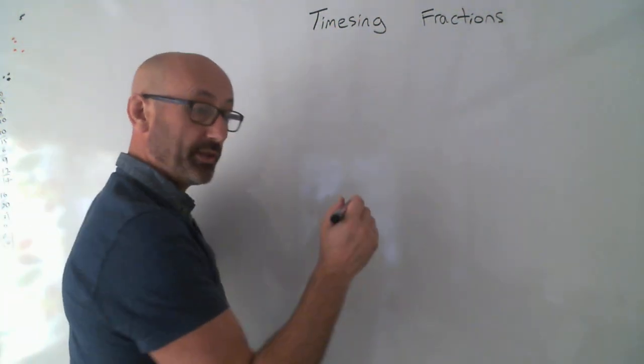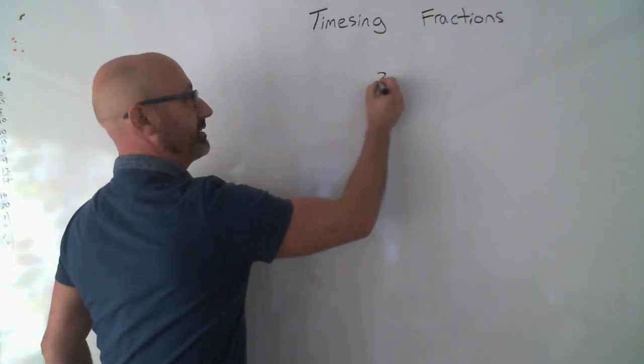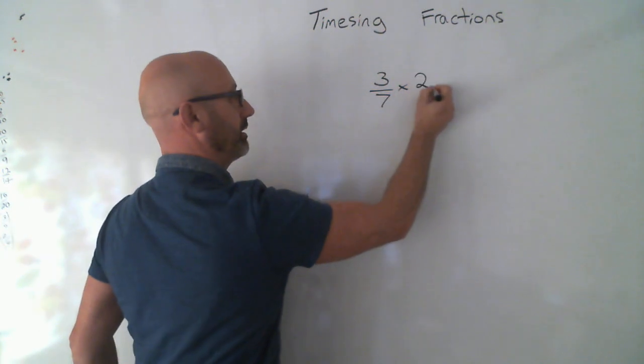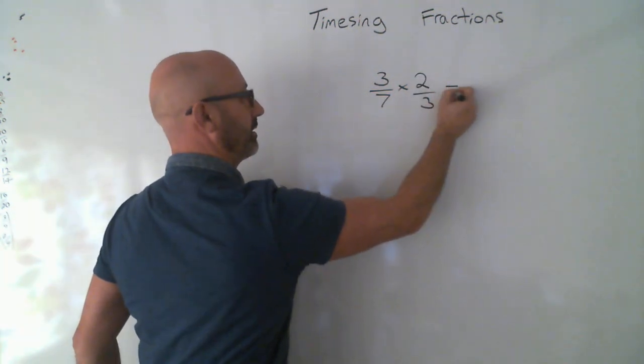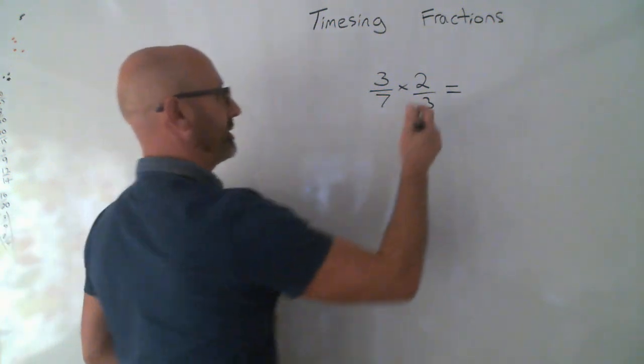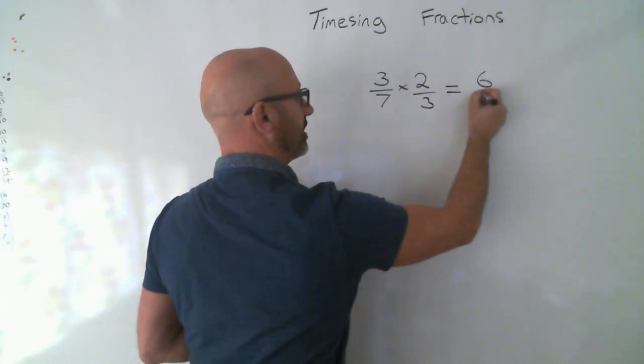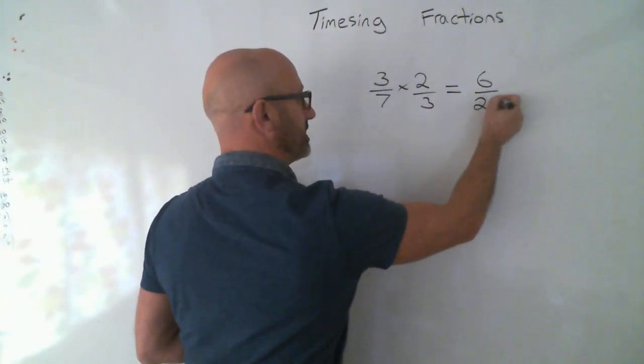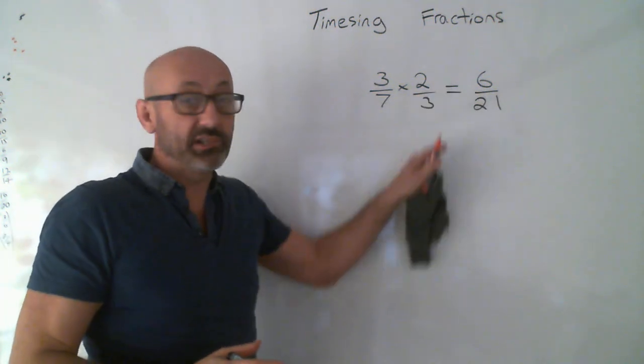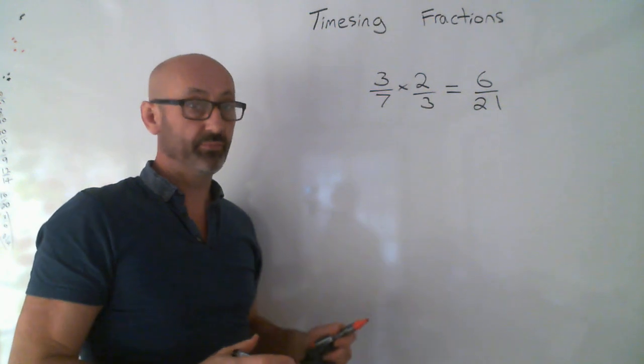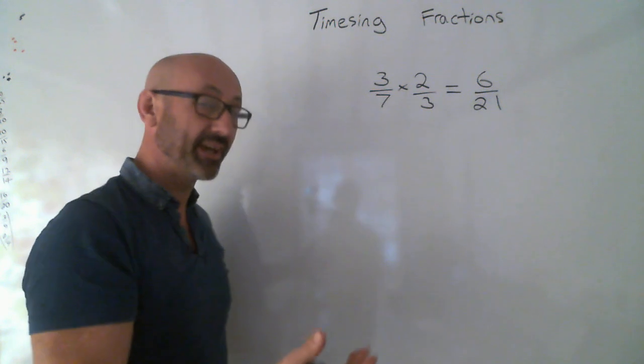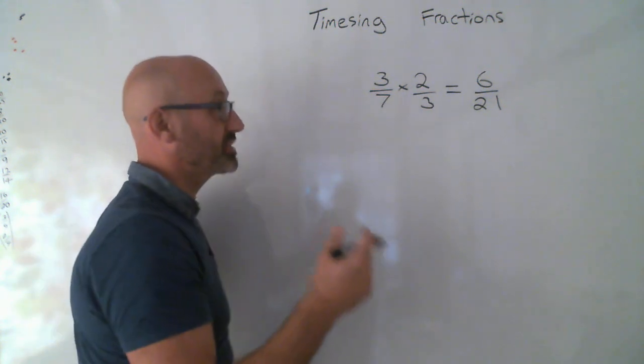So what would the answer to this one be? Yes, it would be 6 over 21. But, did you spot that this will actually simplify? So again, what number goes into the top and bottom? It's that 3 again, that people always miss.